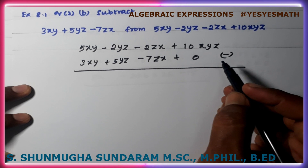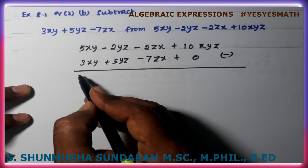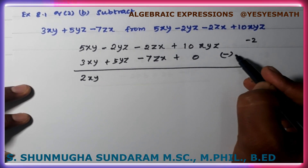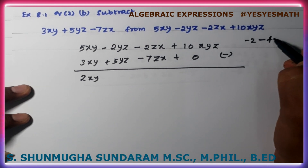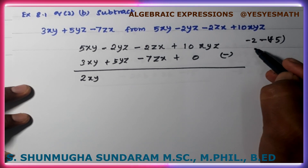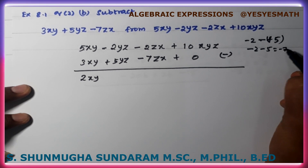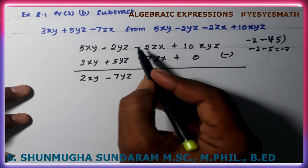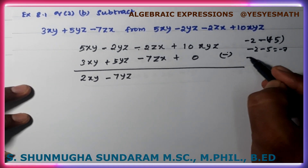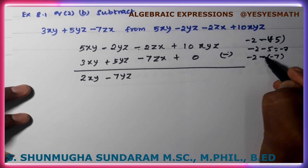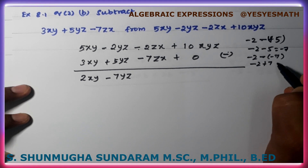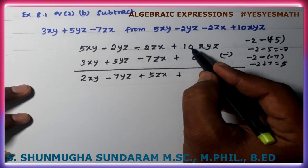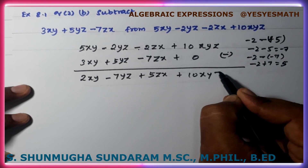XY terms: 5 minus 3 gives 2XY. YZ terms: minus 2 minus open bracket minus 5 close bracket, plus into minus, minus 2 plus 5 — wait, minus 2 minus 5 equals minus 7YZ. ZX: minus 2 minus open bracket minus 7 close bracket, minus into minus is plus, minus 2 plus 7 equals 5ZX. Plus 10XYZ.